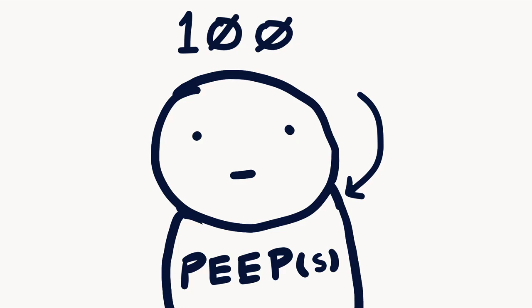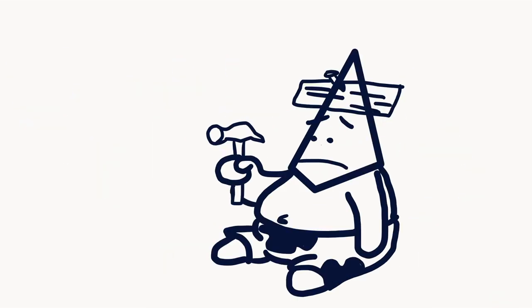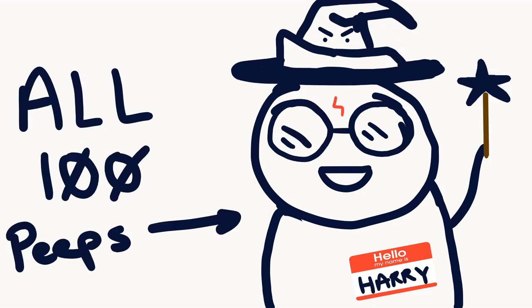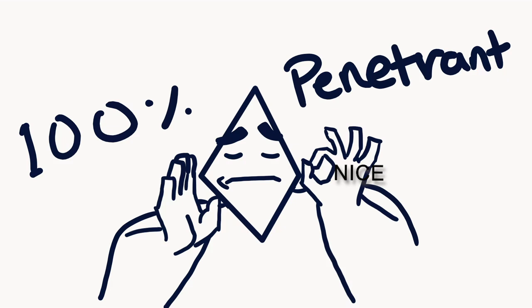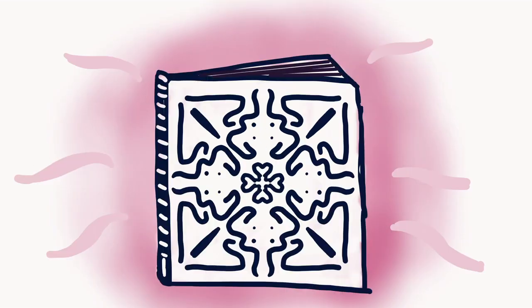Let's set up an example. Let's say we have 100 people — because it makes the math easy. If all these people have the same gene variant that makes all 100 of them have magic powers, then it is 100% penetrant, or this gene variant shows complete penetrance — meaning you have a 100% chance to develop magic powers from this gene variant.